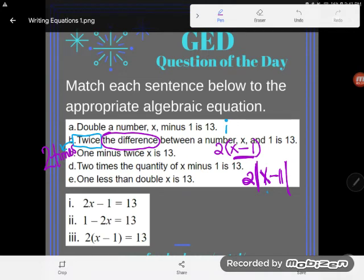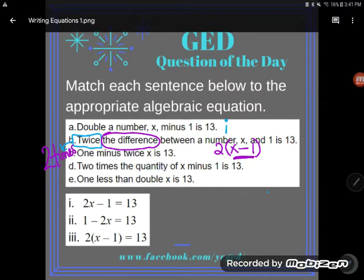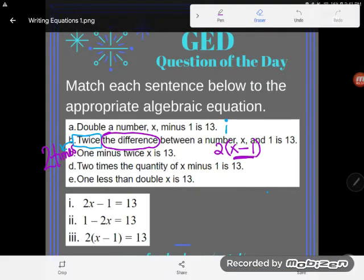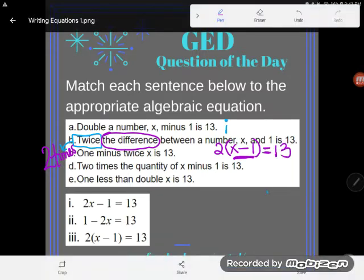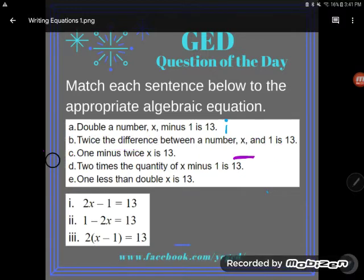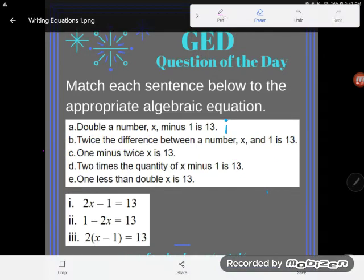Absolute value bars just make sure that your difference will be positive like it's supposed to be. But right now let's just focus on the fact that we need to do two times that entire grouping. So we have to be grouped, and that difference means subtraction. So two times the difference of x and one is, again we see that is, meaning equals, and then 13. And so even though a and b look very similar, they would be written different. B matches with three.